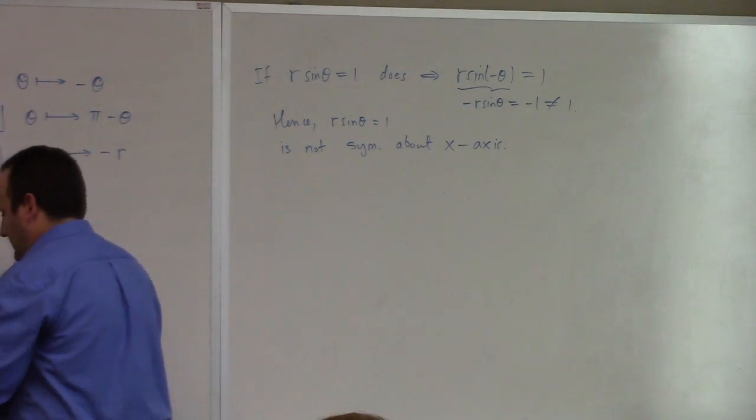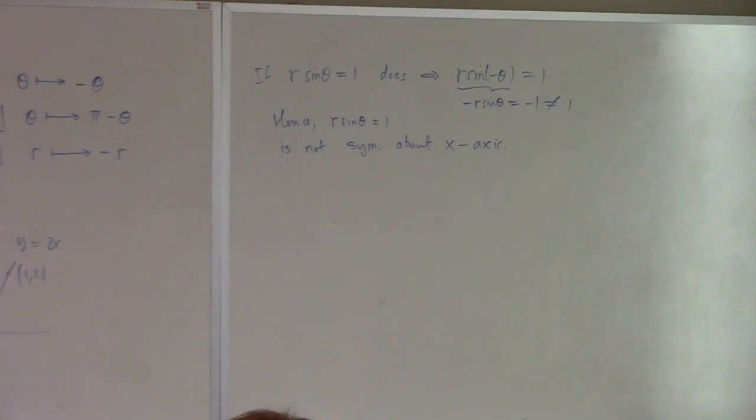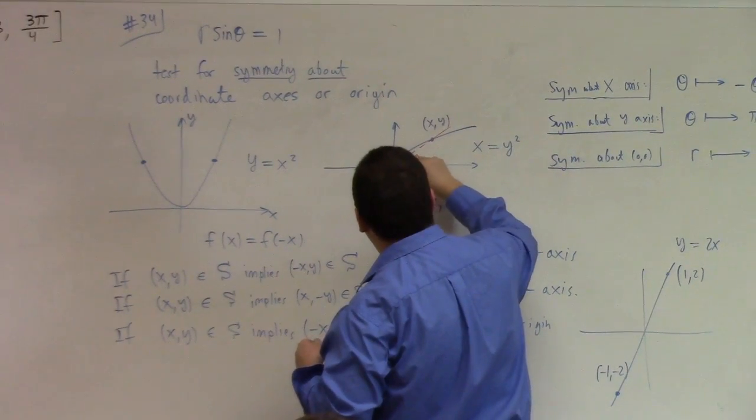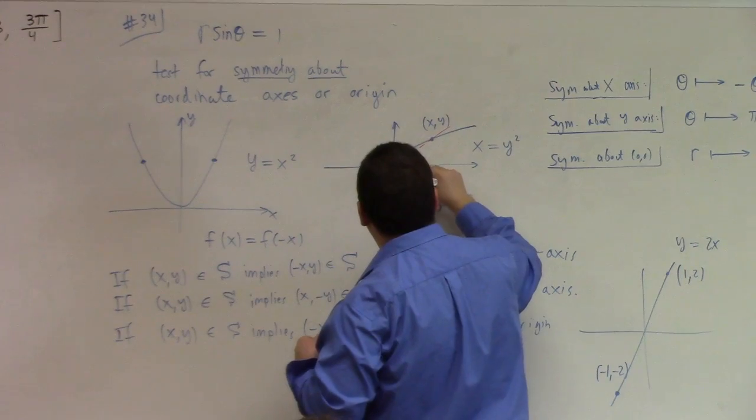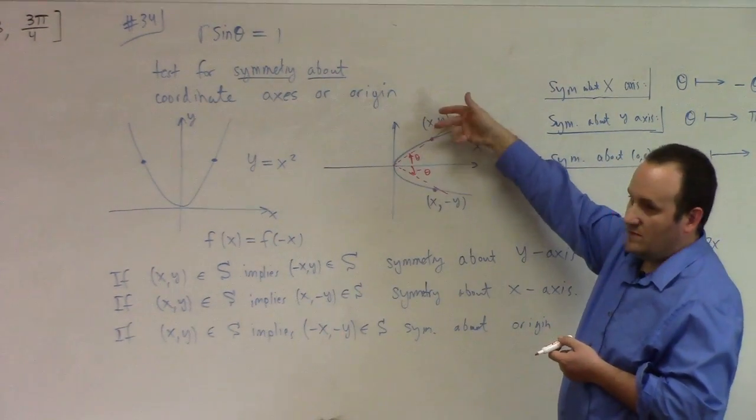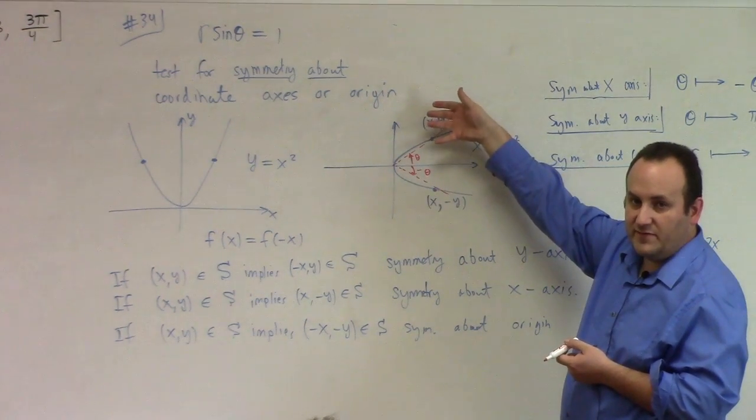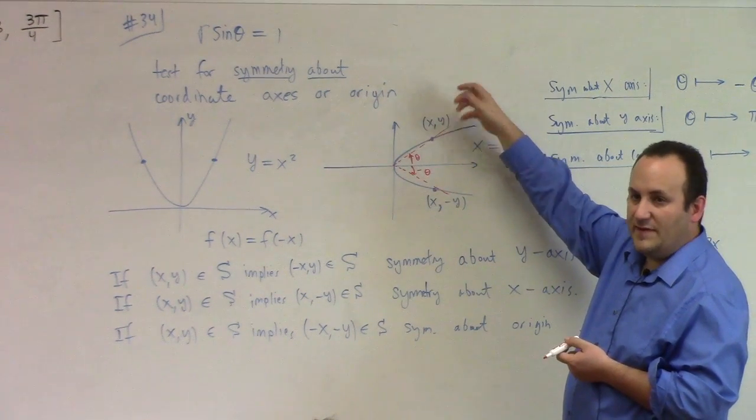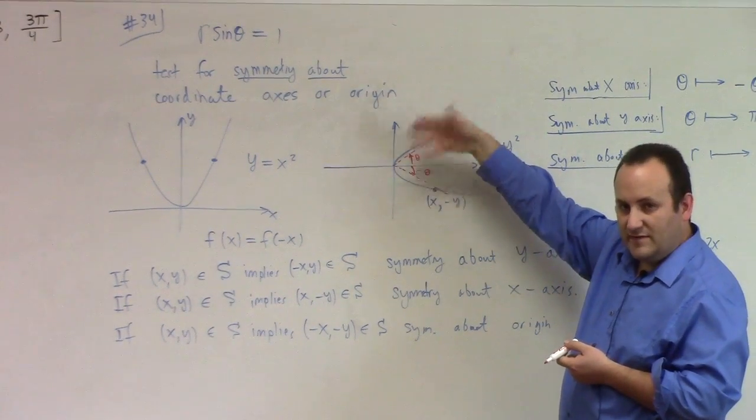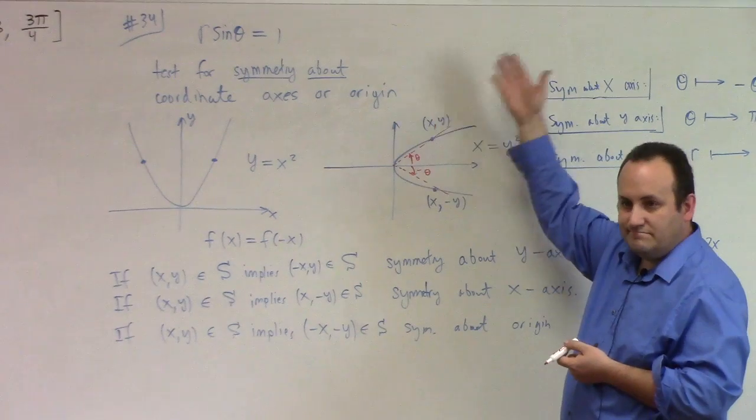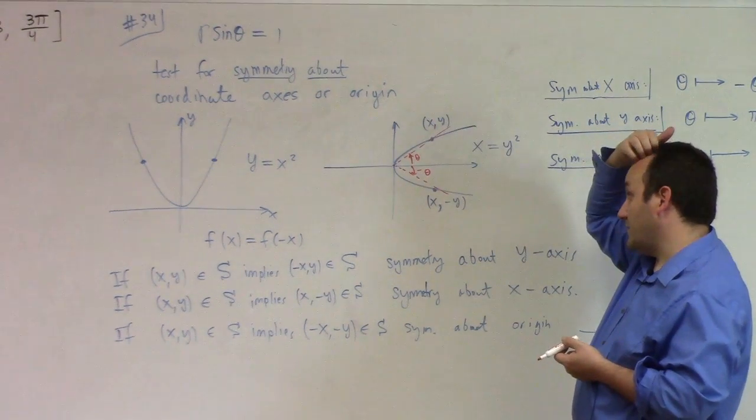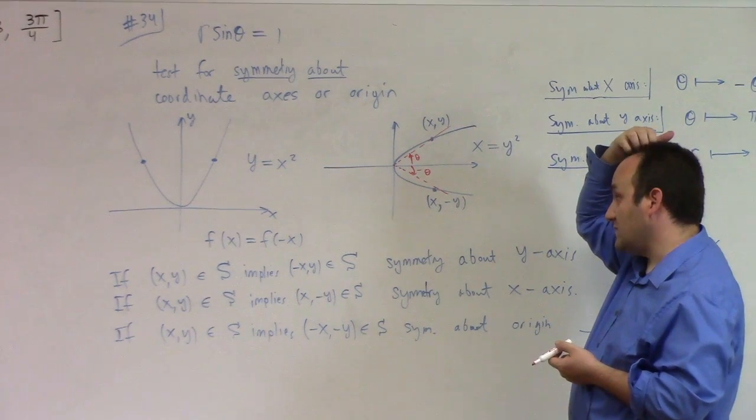Let me say this more, so if we have r sine theta equals to 1, right, does that imply that r times the sine of minus theta is equal to 1? It does not, right? Because if r sine theta is equal to 1, then this, by the fact that sine is odd, gives us minus r sine theta, which is equal to minus 1, of course, which is not equal to 1. So this is, so hence, you know, r sine theta equals to 1 is not symmetric about what is it that we just test for here, x-axis, right?